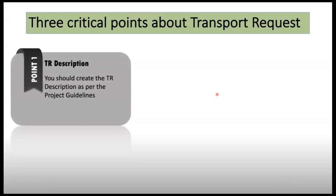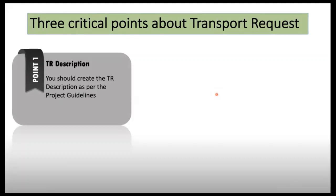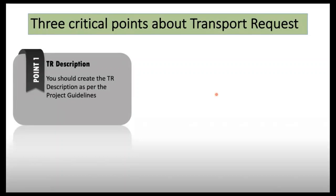The first point is about TR description. When you join a support project, implementation, or rollout project, first of all you get guidelines about the TR description from the basis team or your project manager. For a support project, the TR description will start with your ticket number, maybe your initials, or certain information — two or three digits — followed by what you have done, or the ticket name and description.